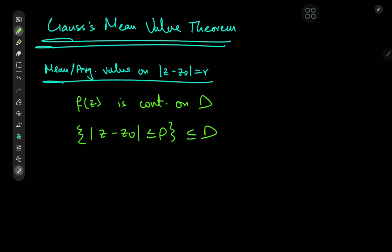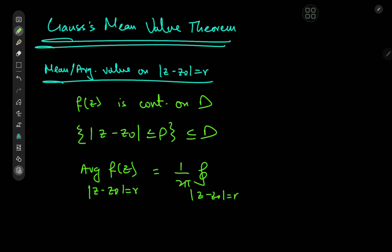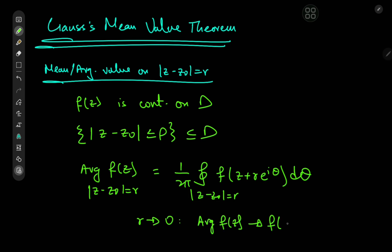This disk is contained within our domain d, and we'll define the average value of the function f of z on the circle centered at z-naught of radius r as 1 over 2pi times the integral over the circle centered at z-naught, radius r, of f of z-naught plus r times e to the i-theta d-theta. One thing to notice here is that because of the continuity of f of z, as r approaches 0, the average value of the function will approach the value of f at the center of the circle.